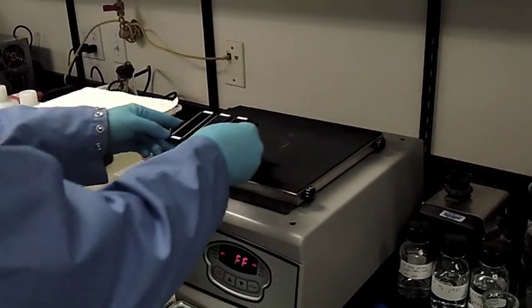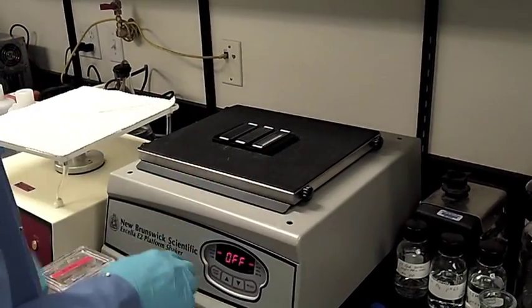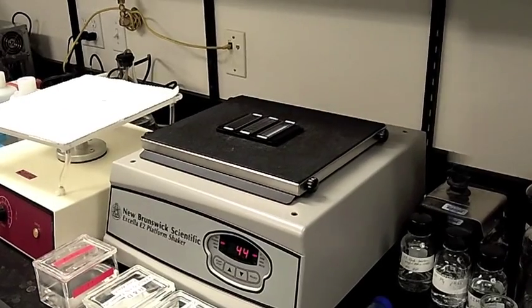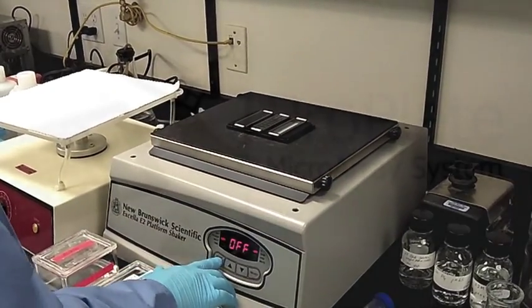The ProPlate assembly is then placed on a shaker or rotator to actively mix during hybridization and then removed when the hybridization is complete.